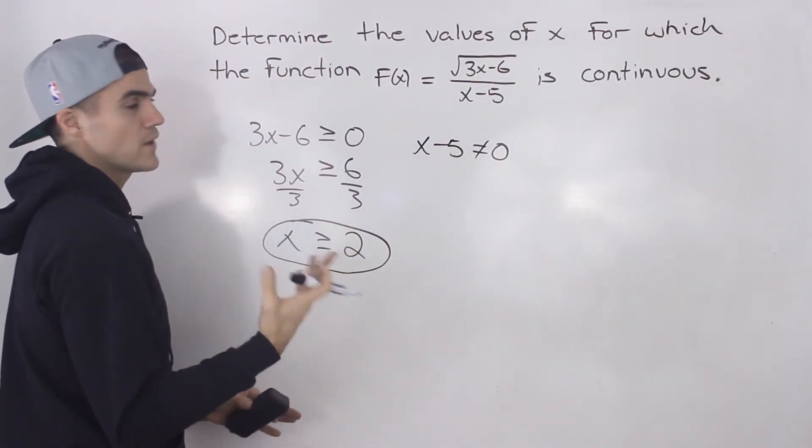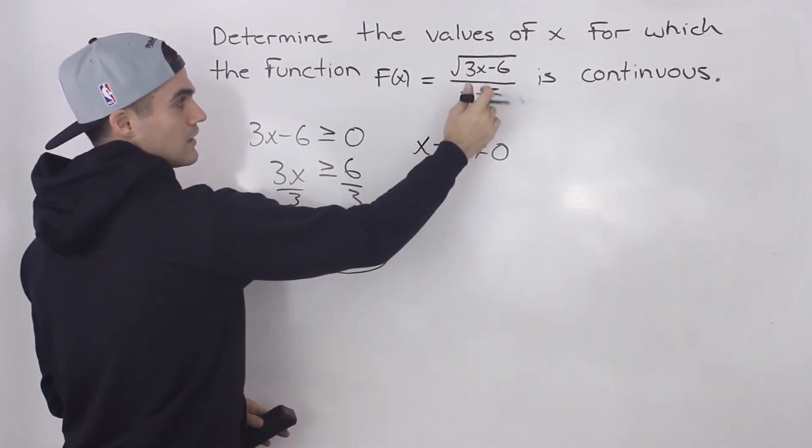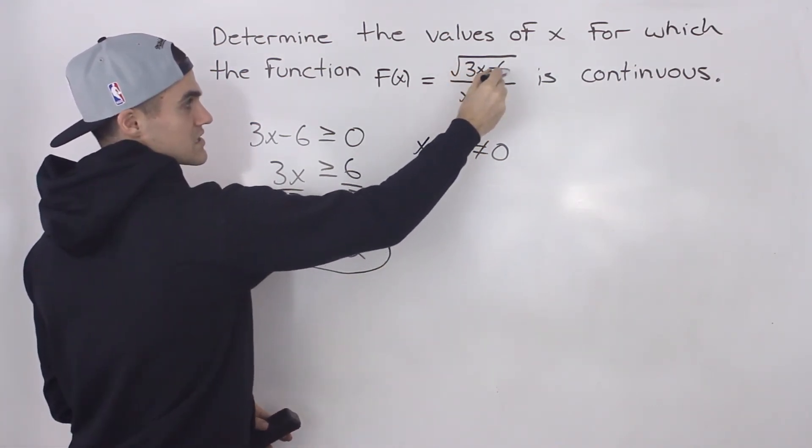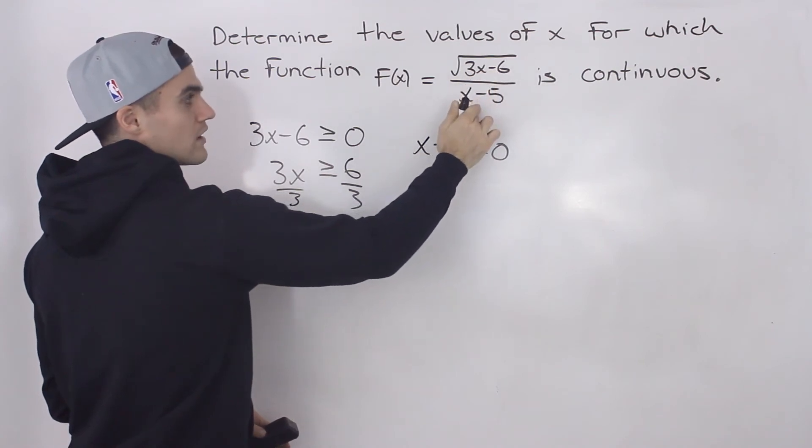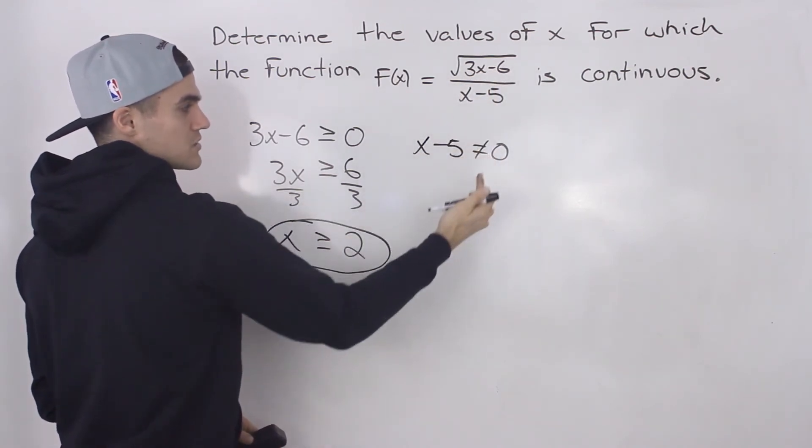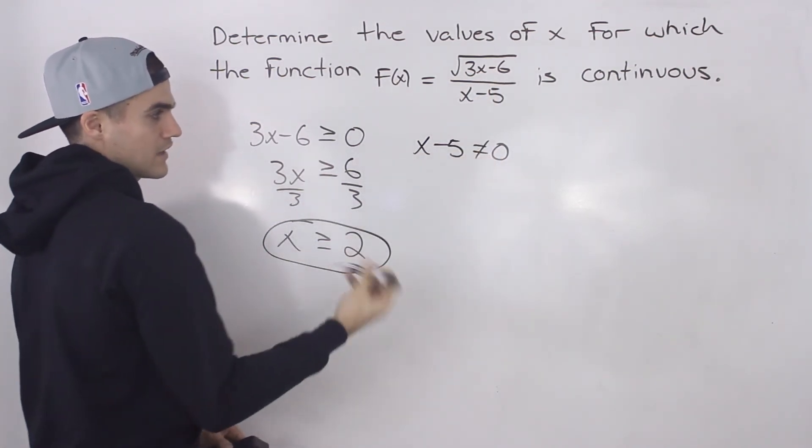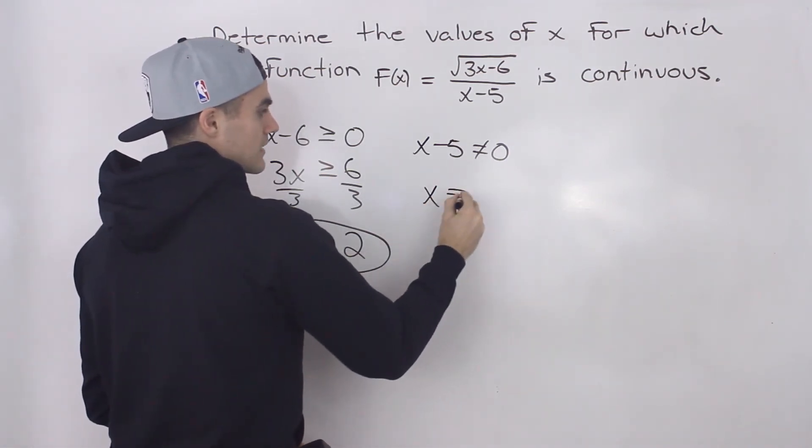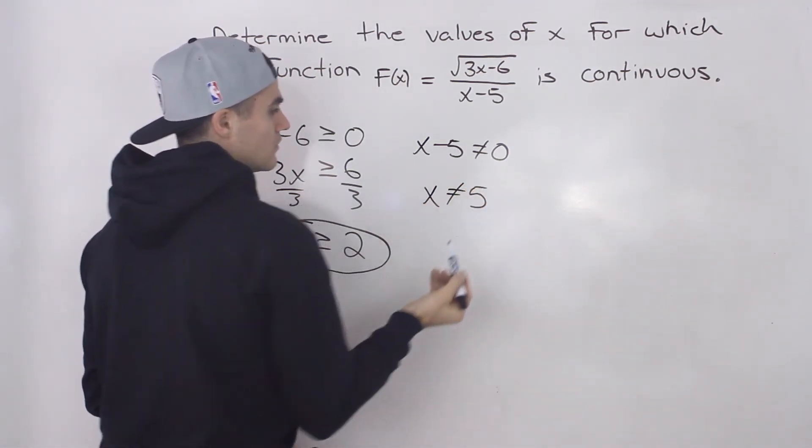So there's two ways that this function can be undefined: either if this expression is negative or if this expression in the denominator is equal to zero. So x minus 5 cannot equal zero, meaning that x cannot equal 5.